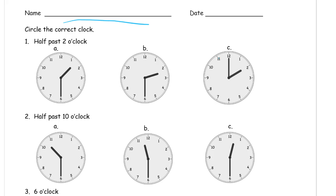When it's in between two numbers, like whenever it says half past, it's going to be in between two. Because this hour hand is moving all the time. So when it's half past two o'clock, it's halfway in between the one and the two, going in this direction — past the one, halfway to the two. But that would be half past one, not half past two.